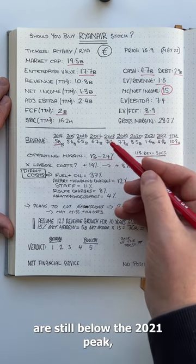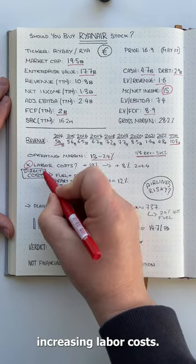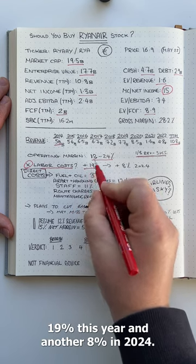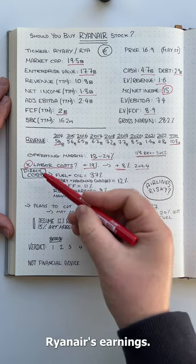However, shares are still below their 2021 peak, and that has a lot to do with increasing labour costs. According to Moody's, airline labour costs will increase 19% this year and another 8% in 2024. This will no doubt impact Ryanair's earnings.